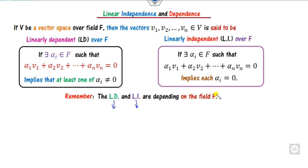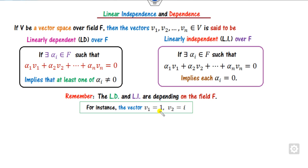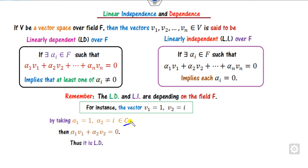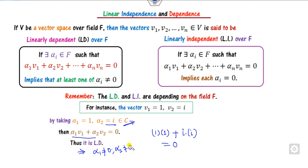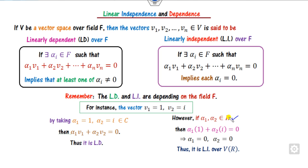Remember that linear dependence and linear independence depend on the field F. For example, consider two vectors v1 and v2. If we take alpha_1 and alpha_2 from the complex field, say alpha_1 = 1 and alpha_2 = iota, then the linear combination can equal zero with both scalars non-zero, making them linearly dependent (LD). But if alpha_1 and alpha_2 are from the real field R, equating real and imaginary parts gives both as zero, making them linearly independent (LI). So these vectors are LD over the complex field but LI over the real field.